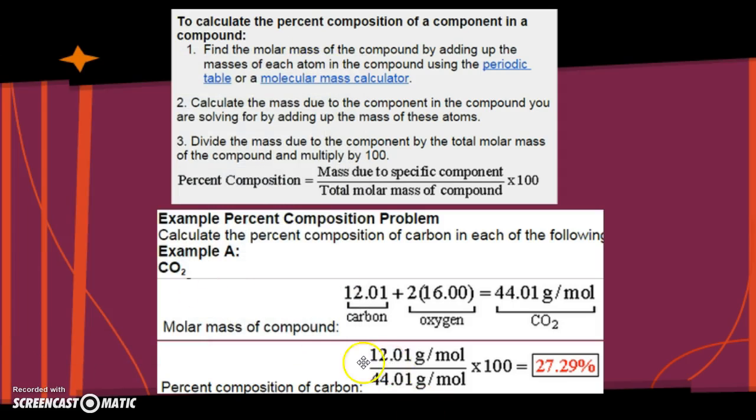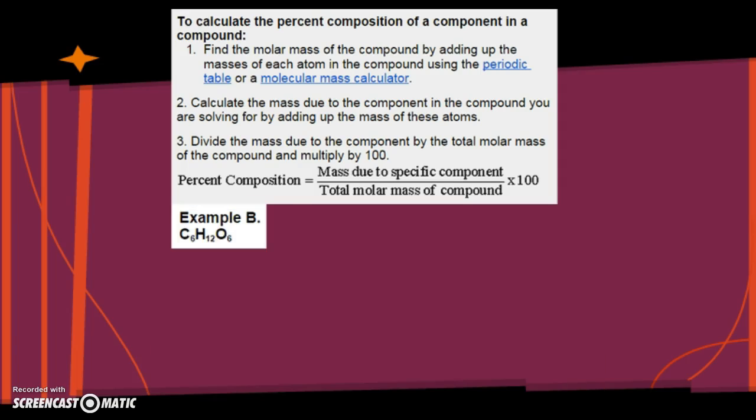So, either way, you can either do both of them, or get your totals and subtract from 100. All right, let's do another example. Let's do C6H12O6, which is glucose, the stuff that your body uses to make energy, and plants make it in photosynthesis.